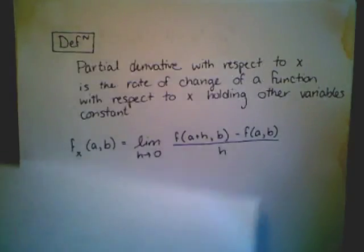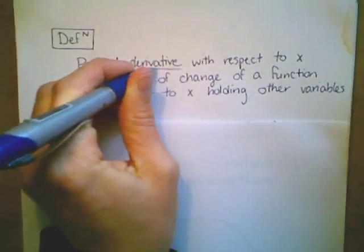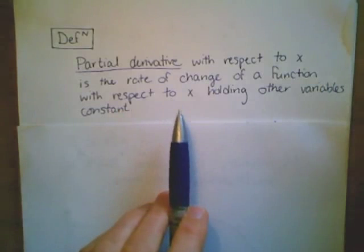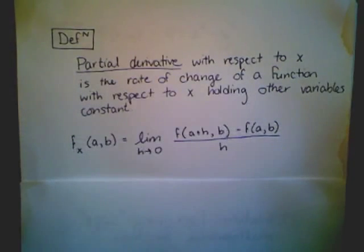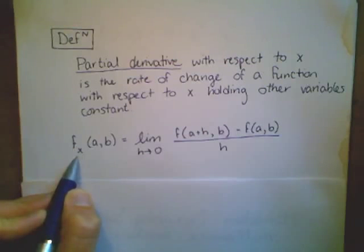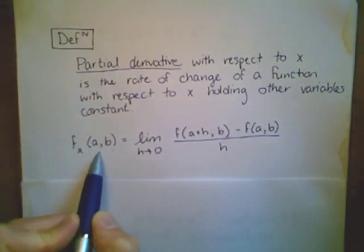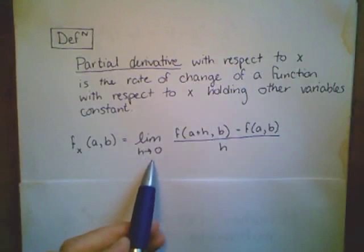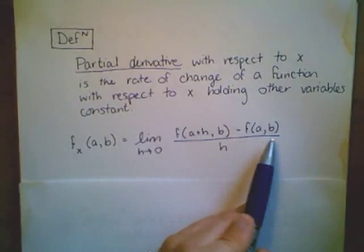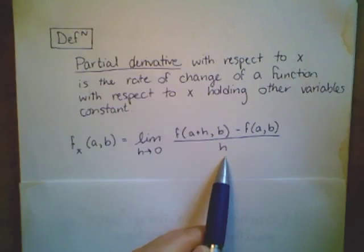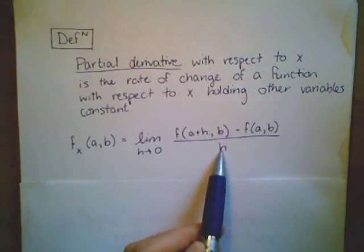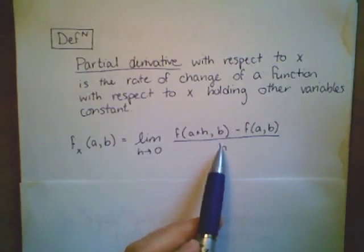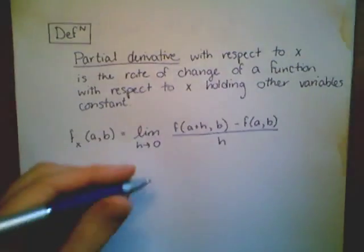Let's formalize that with some formal language. A partial derivative with respect to x is the rate of change of a function with respect to x, holding other variables constant — in this case, y. Our notation f sub x tells us that we're taking the partial derivative with respect to x at the point (a, b), given by the limit as h approaches 0 of [f(a+h, b) minus f(a, b)] all over h. Notice that y value b has no h associated with it — we're looking at smaller and smaller increments only in the x direction while y is held constant.